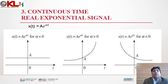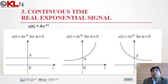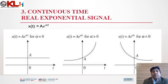Now the third topic is continuous time real exponential signal, given by the formula A·e^(αt). Since it involves the exponential number e, this is called an exponential signal. If α = 0, we get a constant signal like a DC voltage equal to A, as shown in the first figure. If α > 0, we get a growing exponential, as shown in the second graph.